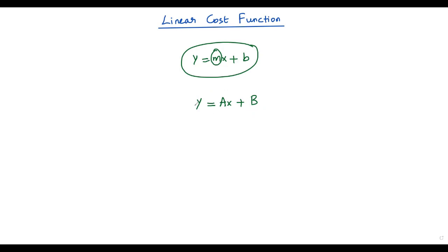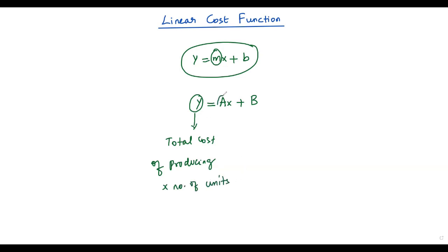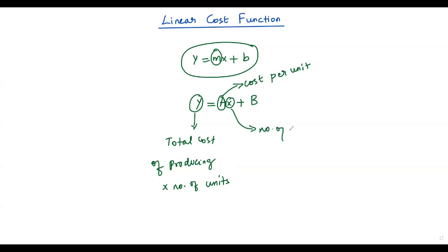Let's understand the components of this linear cost function. In y = Ax + B, y stands for the total cost of producing x number of units of a particular product. A stands for cost per unit — the cost of producing one unit. X stands for the number of units of output. And B stands for fixed cost.